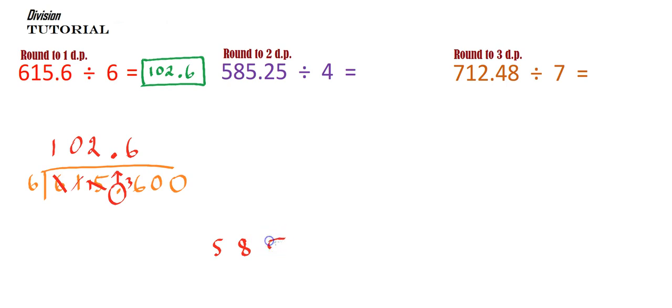5, 8, 5, and it's going to be divided by 585.25 divided by 4. And I'll actually stick another couple of zeros on the end, just in case I need them. Okay, let's start solving.